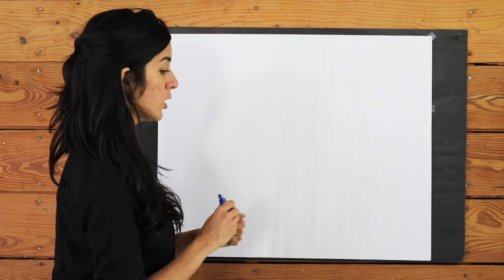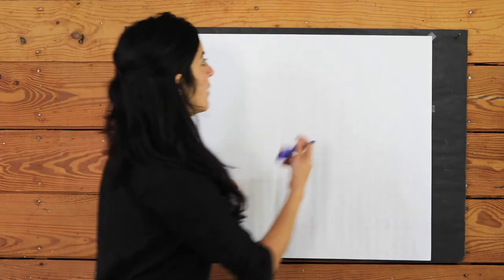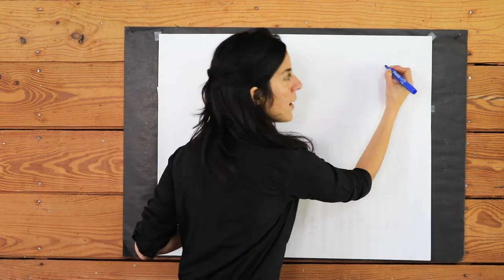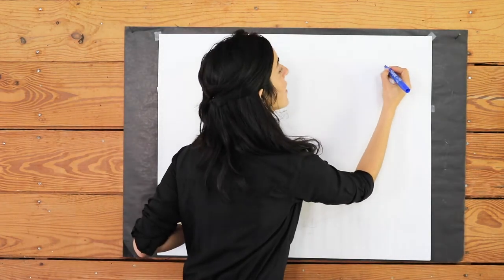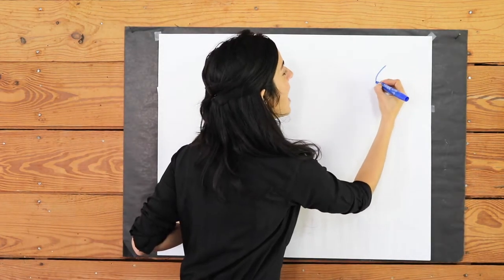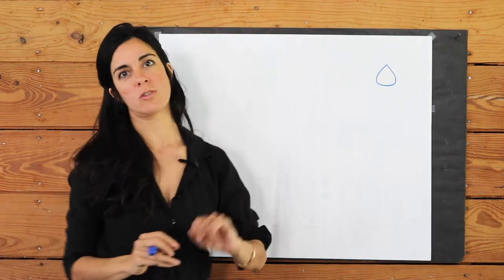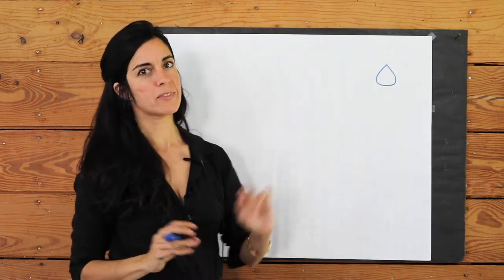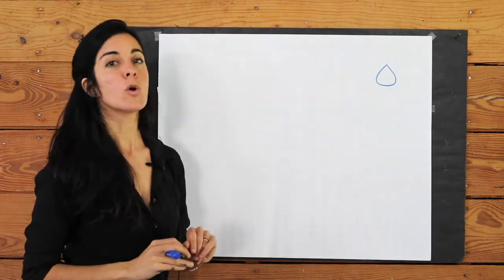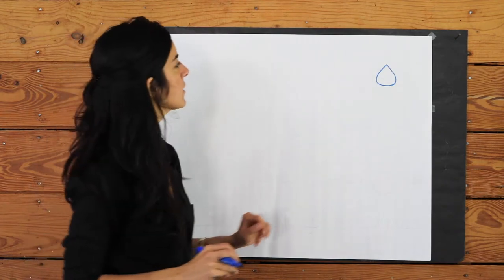First, if H comes all by itself — not connected to anything else — it has this cute little shape, kind of like a raindrop.